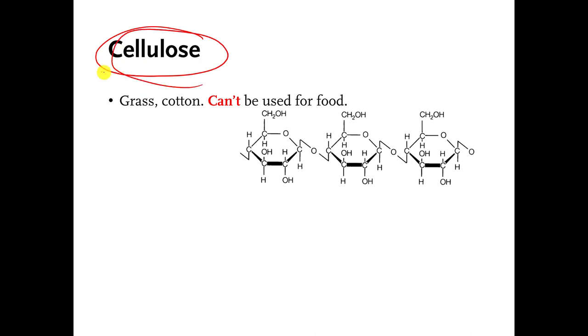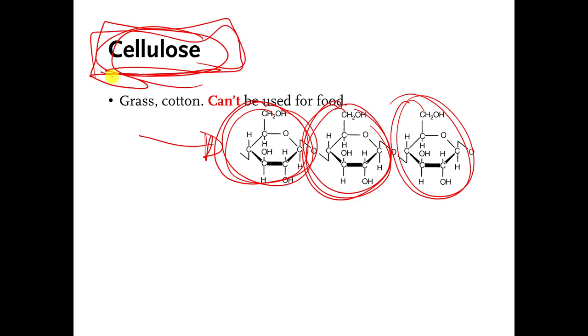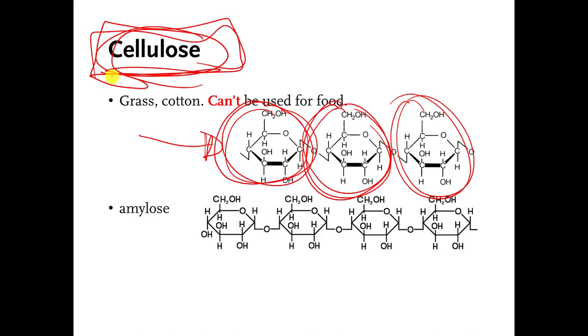Cellulose, this is the stuff that's in plants, it's in grass and things like that. It's glucose is all connected to each other as well, but they're connected in a different way. Because they are connected in a different way, we can eat this stuff, but we can't use it for food. We can't get energy from it because we can't break the attachments. But again, I don't care that you know cellulose. This is just another example, also made by dehydration synthesis.